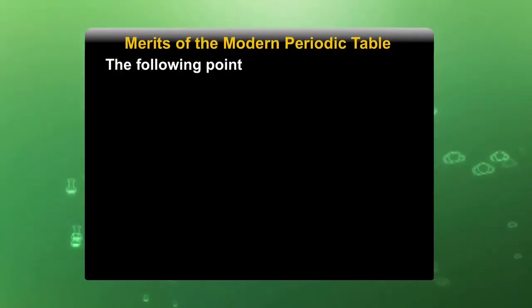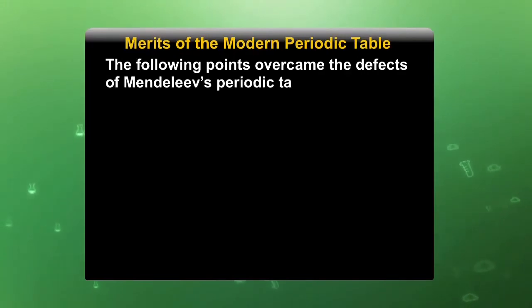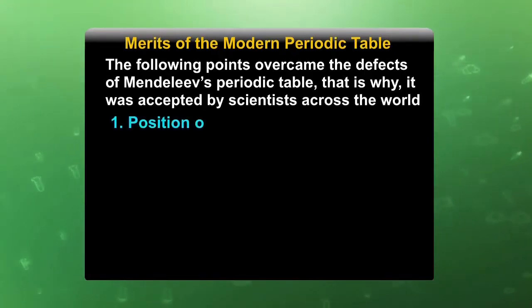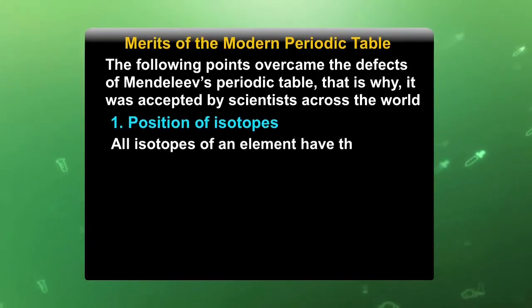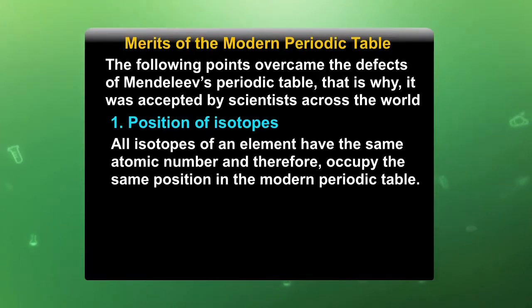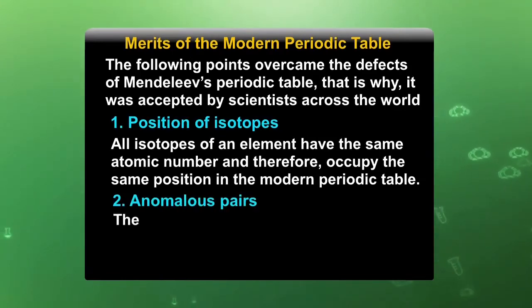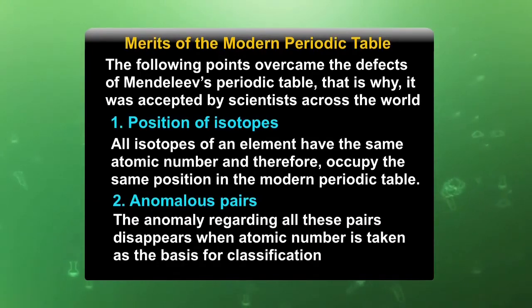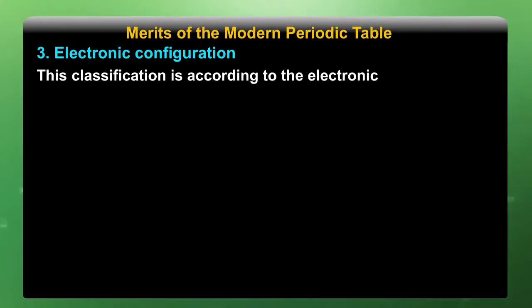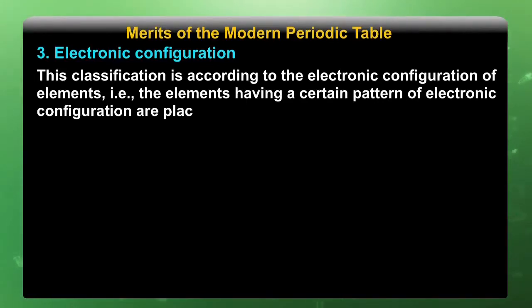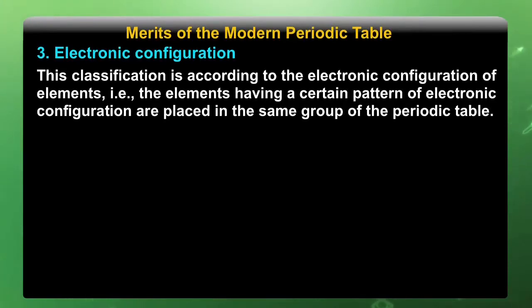The following points overcome the defects of Mendeleev's periodic table, and that is why it was accepted by scientists across the world. Regarding the position of isotopes: all isotopes of an element have the same atomic number and therefore occupy the same position in the modern periodic table. Regarding anomalous pairs: the anomaly disappears when atomic number is taken as the basis of classification. Regarding electronic configuration: elements having a certain pattern of electronic configuration are placed in the same group of this periodic table.